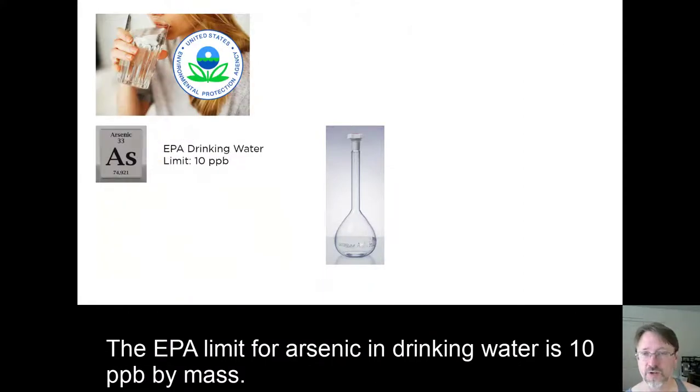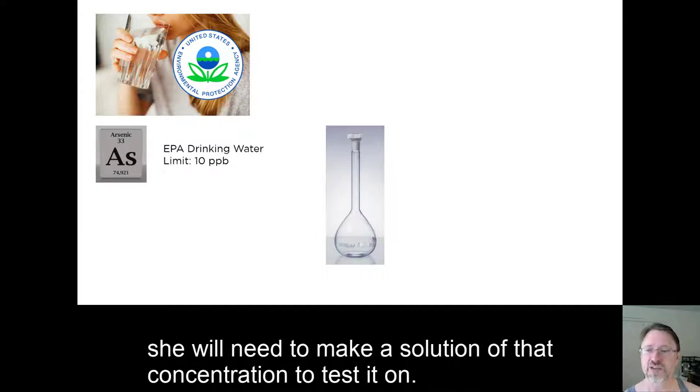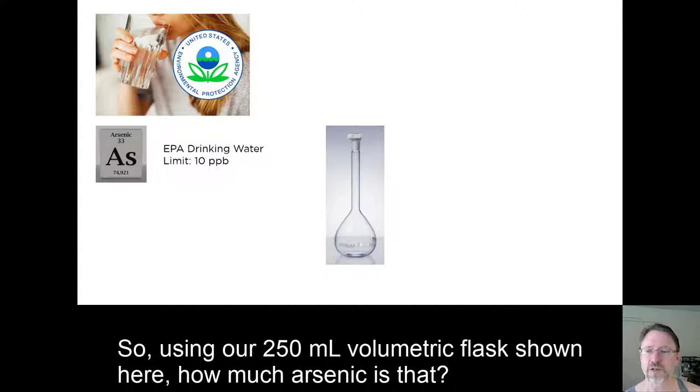The EPA limit for arsenic in drinking water is 10 ppb by mass. If a scientist wants to test a detection method or a remediation method at that level, she will need to make a solution of that concentration to test it on. So using our 250 milliliter volumetric flask shown here, how much arsenic is that?